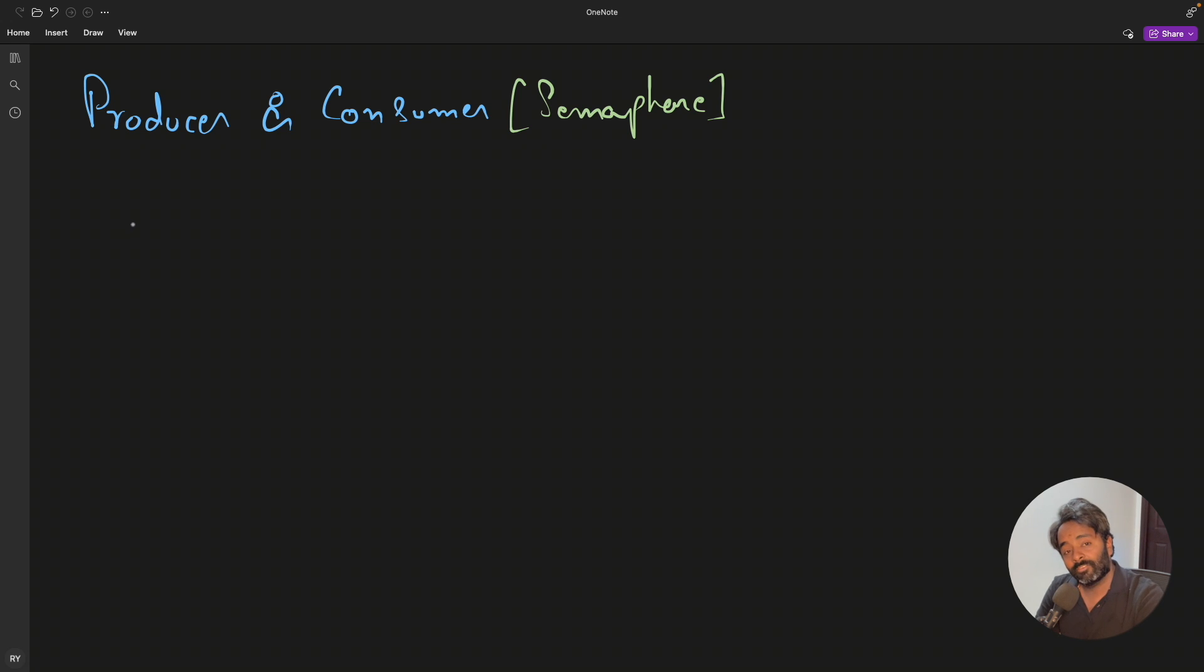For that we have a semaphore data type in our C++ programming language called std::binary_semaphore. I'll just say signal_producer and we'll have another variable signal_consumer. This will be initialized with one and this is going to be zero.